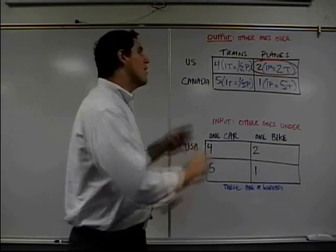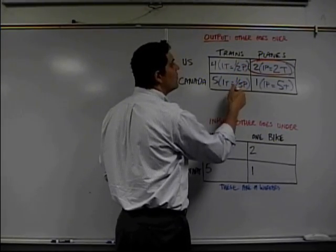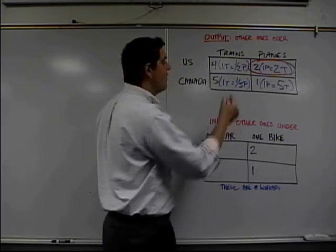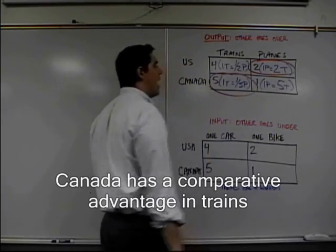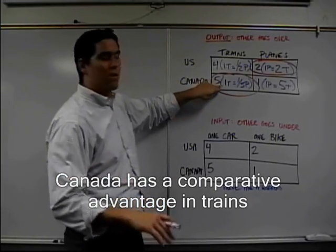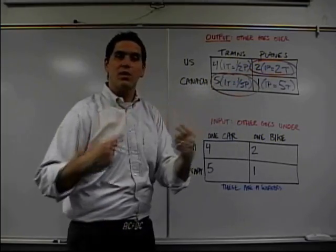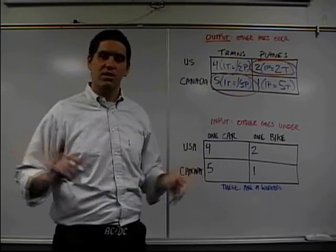But right here, logically, it tells you, right? I'd rather have the country that gives up only one-fifth of a plane produce it instead of the country that gives up one-half of a plane. So right here, they have a comparative advantage. There's your answer, right? Canada should export and produce only trains. U.S. should export and produce only planes, and they should trade to each other, and they both benefit. That's the concept.